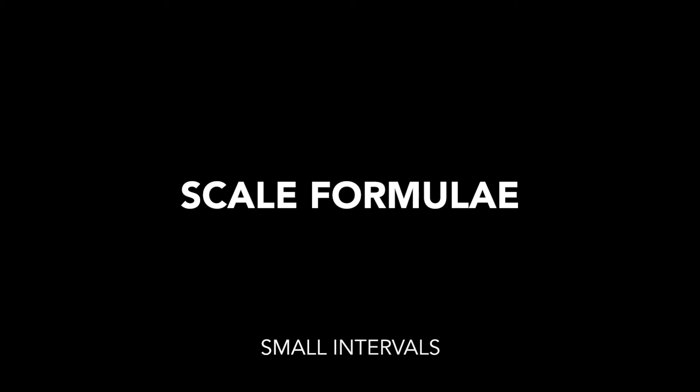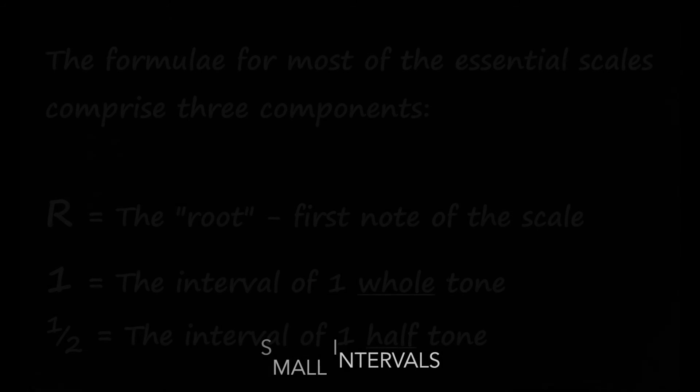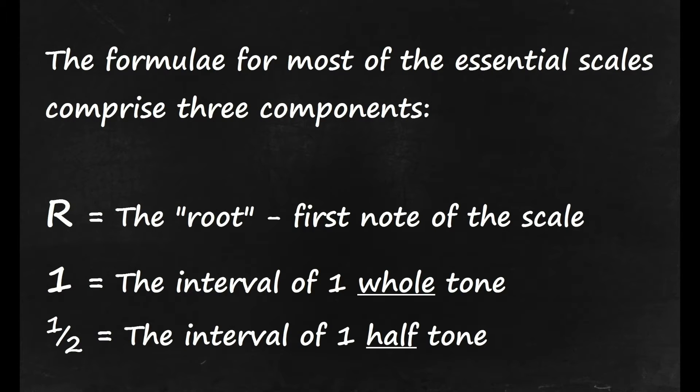Let's start by looking at scale formulae. The formulae for most of the essential scales comprise three components. R signifies the root, which is the first note of the scale. Number one represents the interval of one whole tone, and the half represents the interval of one half tone.